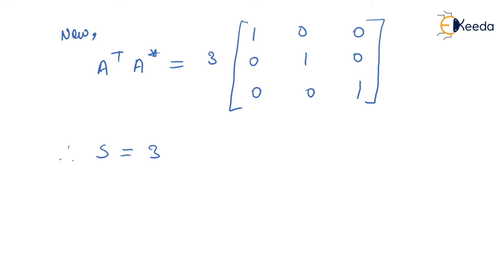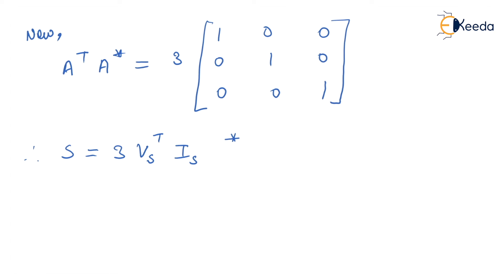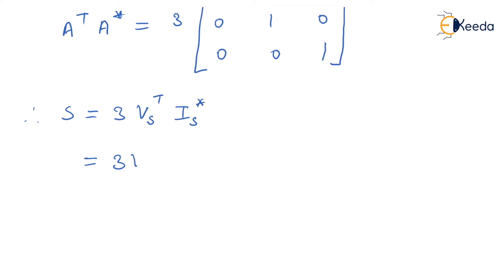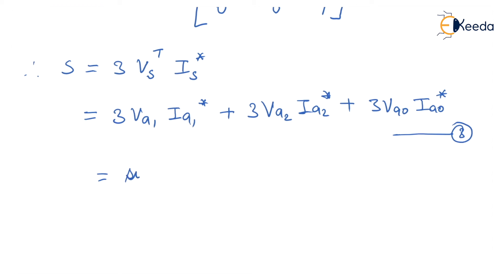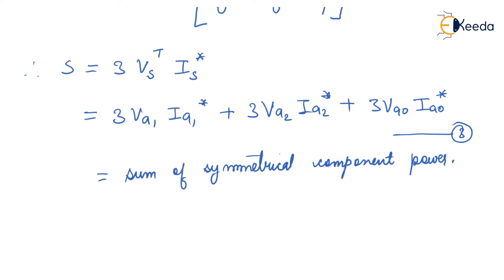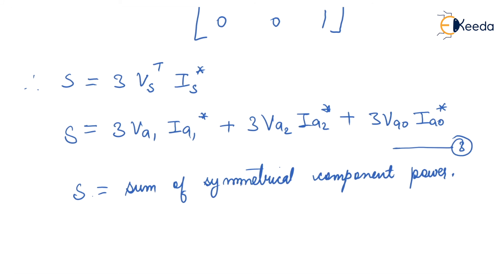Therefore, S equals 3·Vas transpose into Is conjugate, or we can write this as 3·Va1·Ia1 conjugate plus 3·Va2·Ia2 conjugate plus 3·Va0·Ia0 conjugate. This is equation number three, and this is the sum of symmetrical component powers. Thank you.